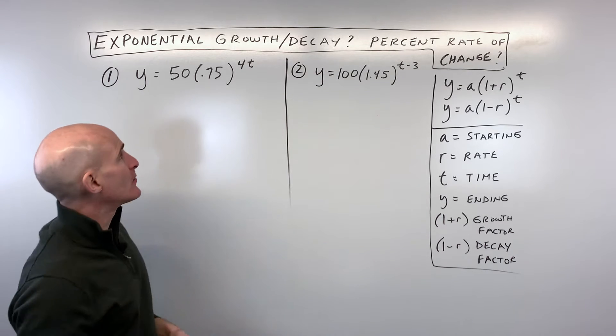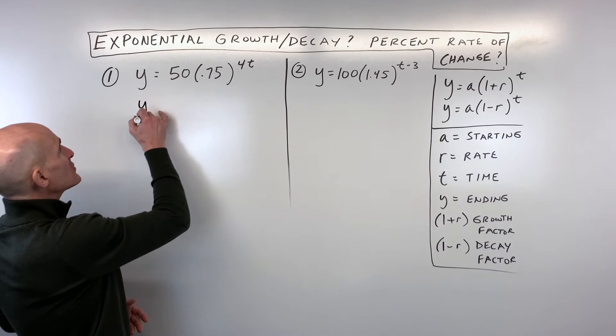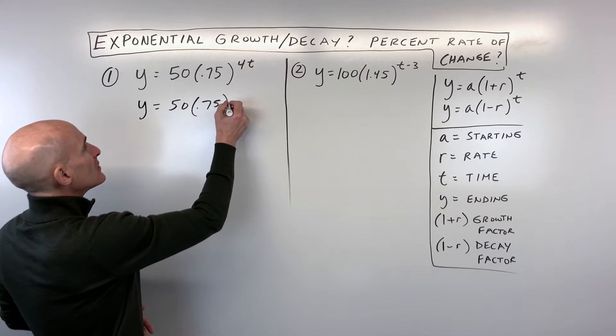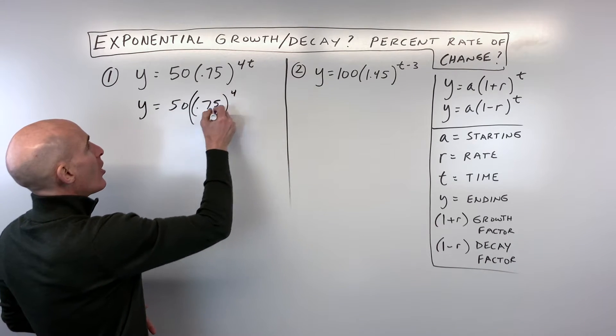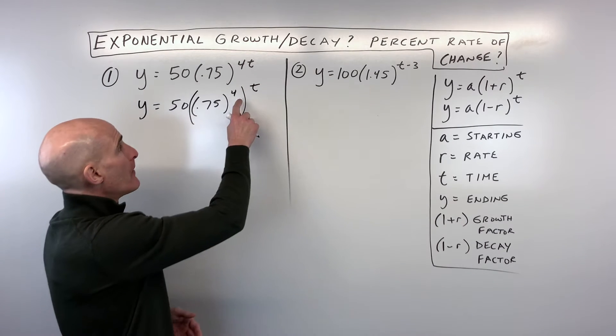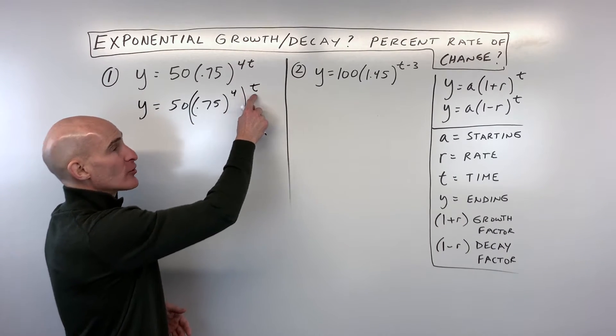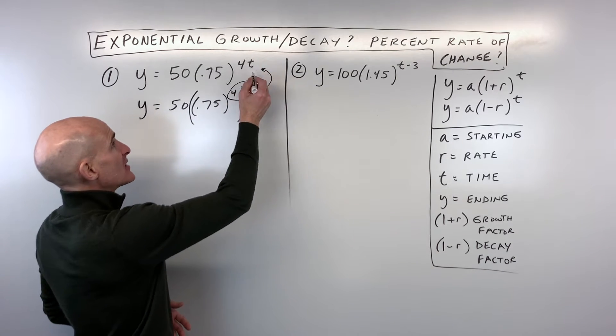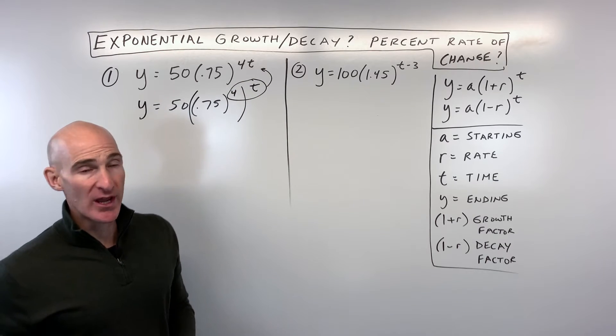Well, we're going to use our rules of exponents, and the way we're going to do that is we're going to say 0.75 to the 4th, all raised to the t power, because remember, when you have a power to a power, or an exponent raised to another exponent, what do you do? You multiply those exponents, and that's going to give us back our original equation.